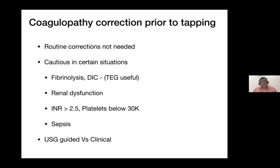Regarding USG-guided versus percussion-based tapping: as long as you understand the anatomy of the inferior epigastric artery, there is not much difference between a blind tap and USG-guided tap. In fact, our experience suggests that small collaterals are often missed on ultrasound, and we have seen more complications from major bleeds following USG-guided tapping when inexperienced operators see large pockets of fluid and complacency creeps in.